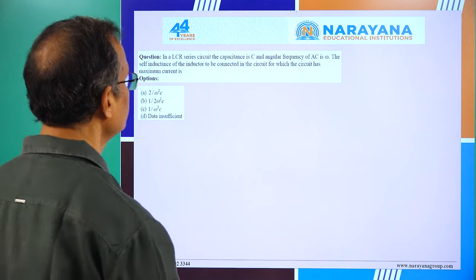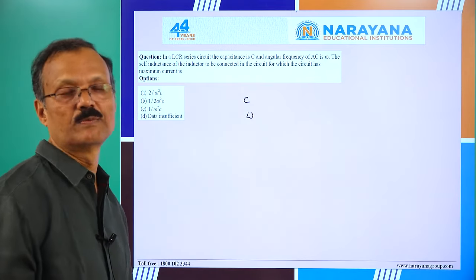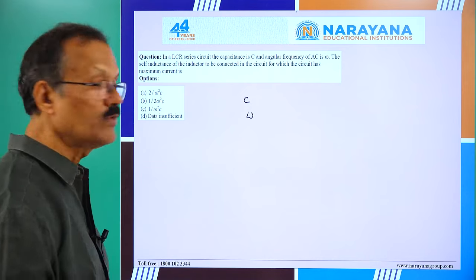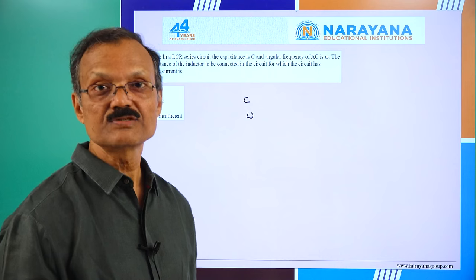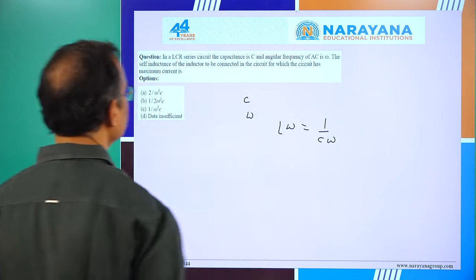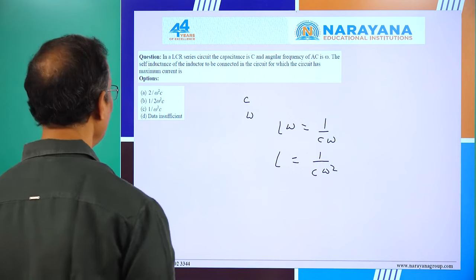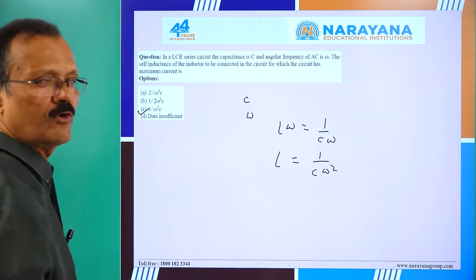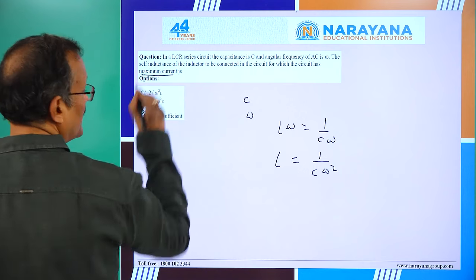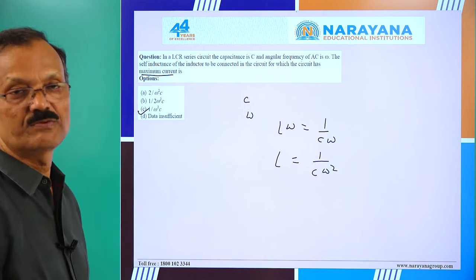In an LCR circuit with capacitance C and angular frequency ω, find self-inductance L for maximum current. For maximum current, capacitive reactance equals inductive reactance: Lω = 1/(Cω). Therefore L = 1/(Cω²) = 1/(ω²C). Answer is C.